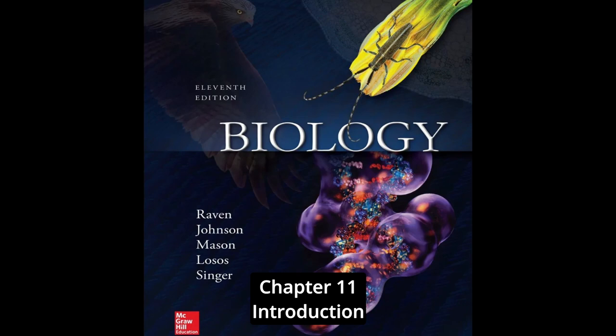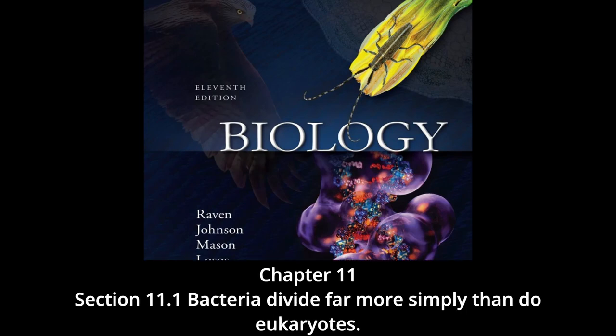All species of organisms — bacteria, alligators, the weeds in a lawn — grow and reproduce. From the smallest of creatures to the largest, all species produce offspring like themselves and pass on the hereditary information that makes them what they are. In this chapter we begin our consideration of heredity with an examination of how cells reproduce. The mechanism of cell reproduction and its biological consequences have changed significantly during the evolution of life on Earth.